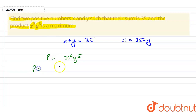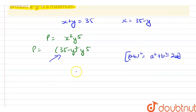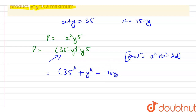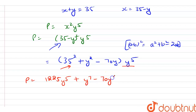Now let's put our value of x. So here we have (35 minus y) whole squared into y⁵. As we know there is an identity that (a minus b) whole square is equal to a square plus b square minus 2ab. So after using this identity, here we have 35 squared plus y squared minus 70y, multiplied into y raised to power 5. After solving further, P is equal to 1225 into y raised to power 5, plus y raised to power 7, minus 70 into y raised to power 6.